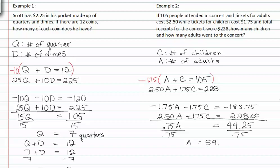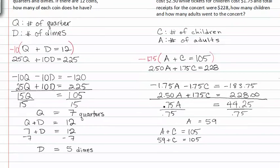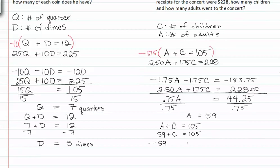If we know fifty-nine is the number of adults that attended, and altogether the adults plus the children equaled a hundred and five people in the concert, we could say fifty-nine plus children equals one o five. Subtracting fifty-nine from both sides we get C is equal to forty-six.